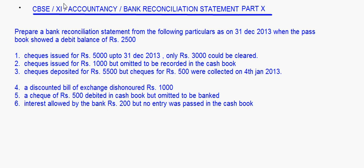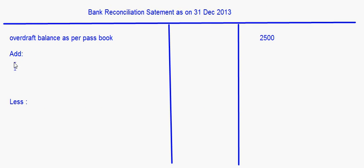Now let's take up the first one. Checks issued for Rs. 5,000, up to 31st December 2013 only Rs. 3,000 could be cleared. That means checks amounting to Rs. 2,000 could not be cleared. So when checks are issued, the overdraft balance as per the cashbook goes up. The overdraft balance as per the cashbook has gone up by 5,000 whereas in the bank it has gone up only by 3,000 — the difference is Rs. 2,000. So this should be added: checks issued but not cleared, Rs. 2,000.